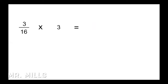Next: 3 sixteenths times 3. Remember, 3 is the same as 3 over 1. Multiplying straight across: 3 times 3 is 9, and 16 times 1 is 16. So 9 sixteenths. When working in sixteenths, eighths, or quarters, if the top number is odd, it's not reducible — with very few exceptions.